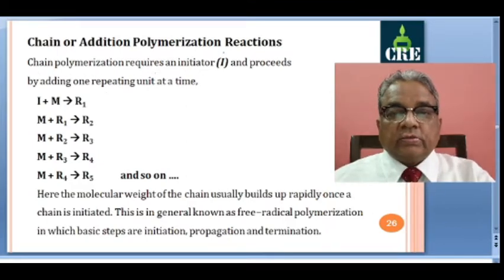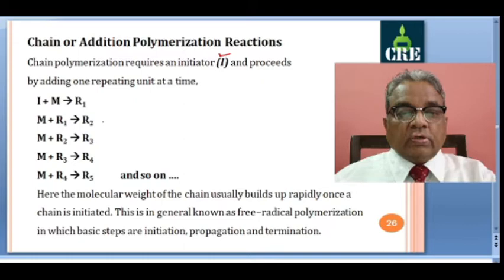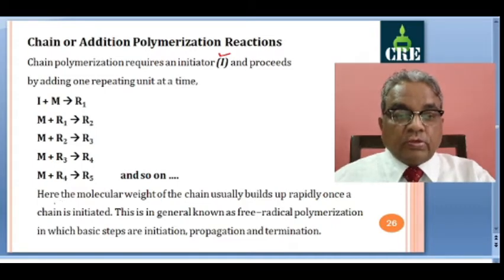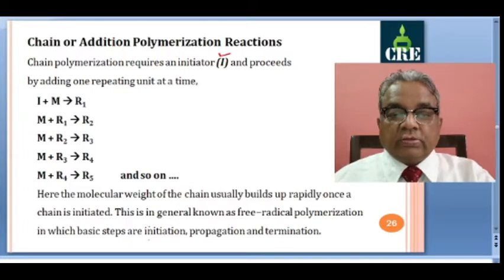Chain polymerization requires some initiator to initiate the reaction, and it proceeds by adding one repeating unit at a time. We can write these reactions as: initiator plus monomer giving radical R1; monomer plus R1 gives radical R2, which further grows by combining with monomer to give R3, R4, R5, and so on. It continues till the reaction terminates. The molecular weight of the chains usually builds up rapidly once the chain is initiated. This is known as free radical polymerization, in which the basic steps are initiation, propagation, and termination.